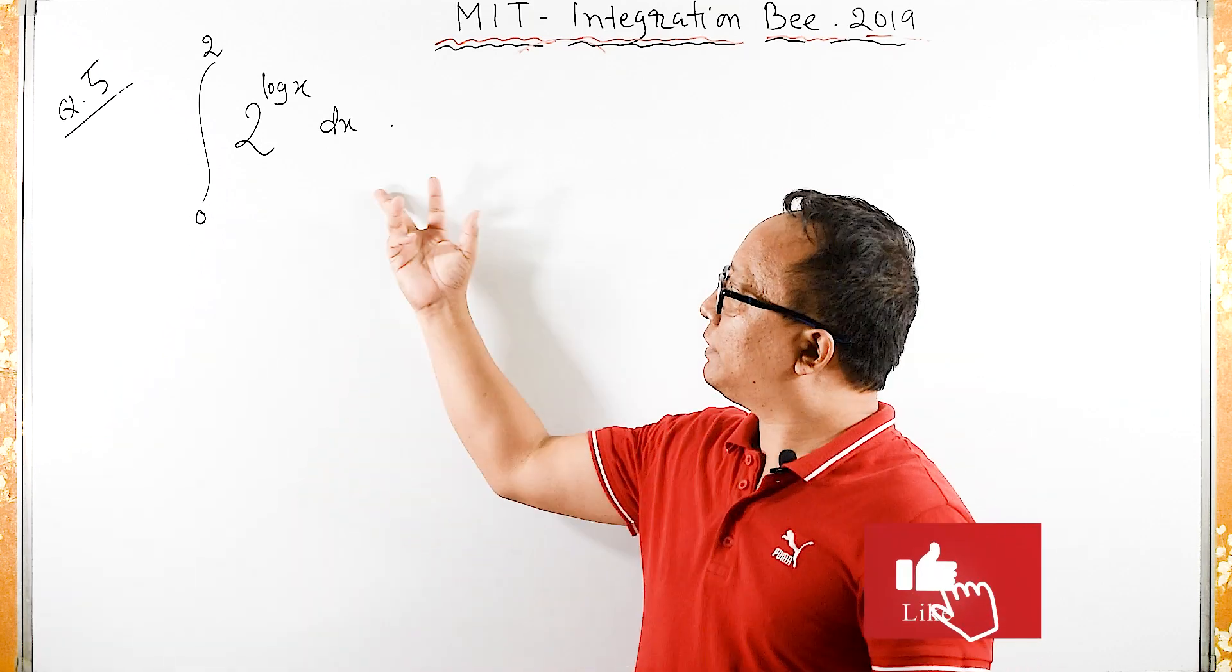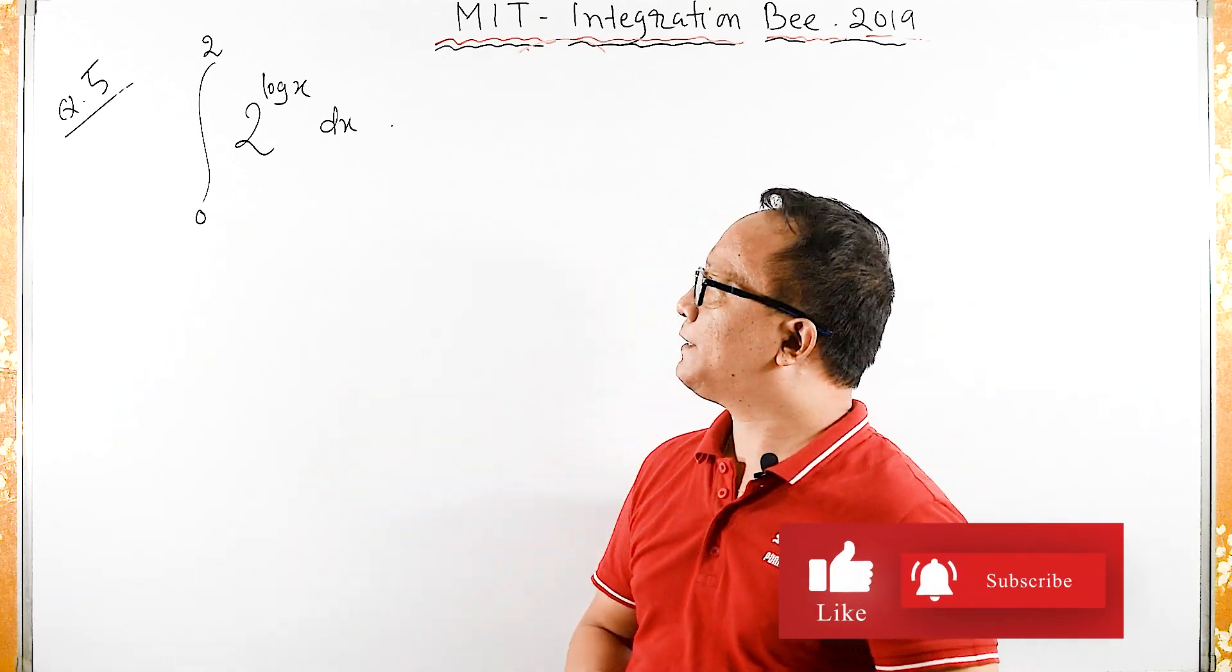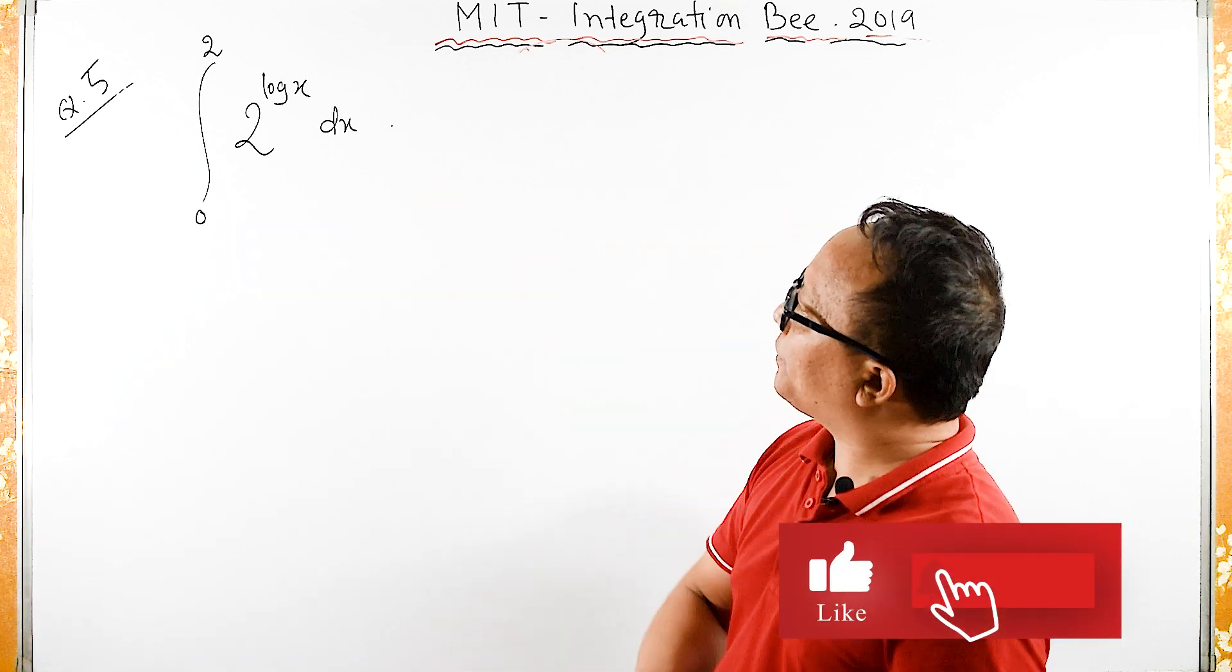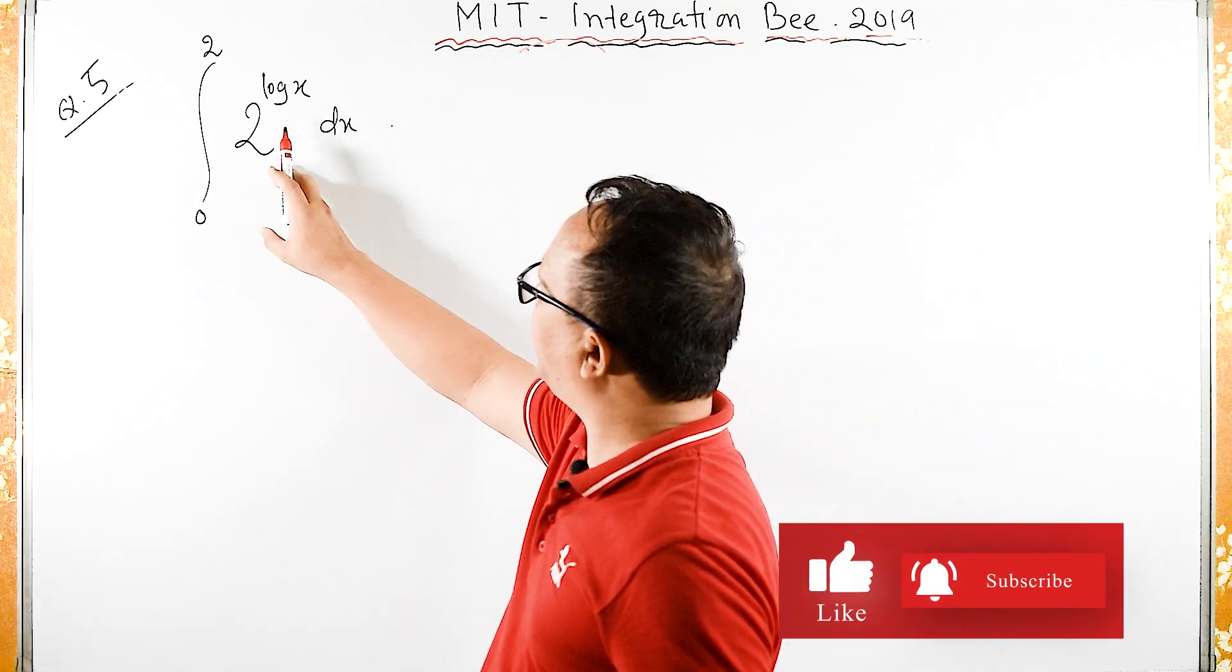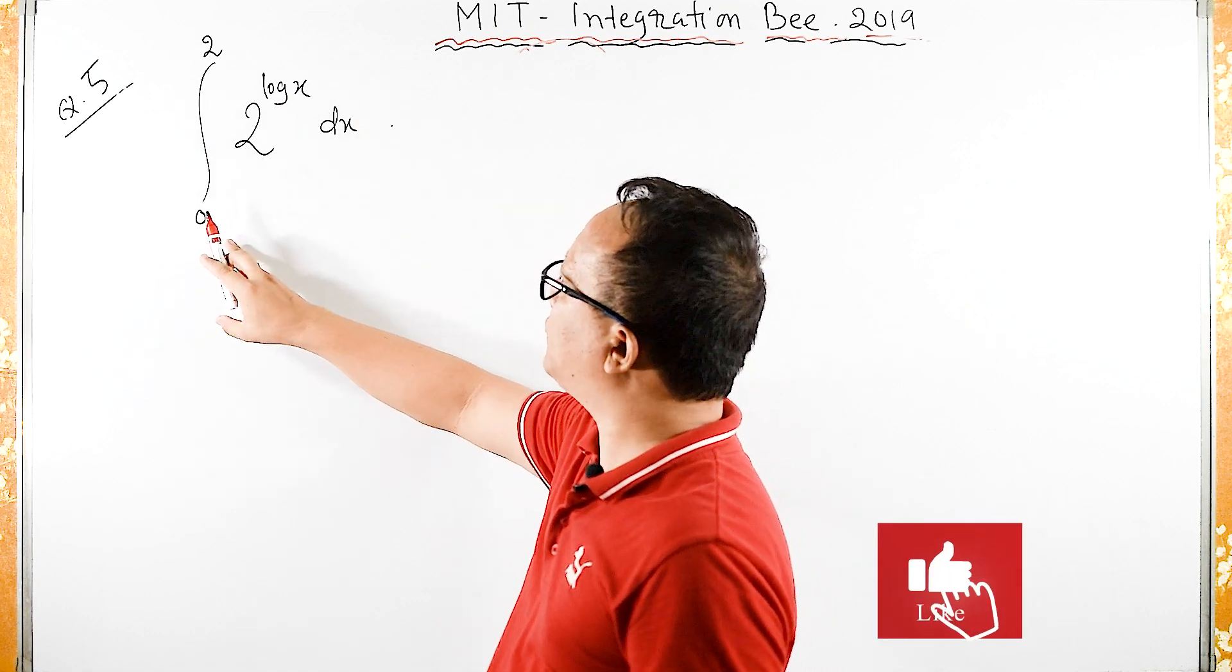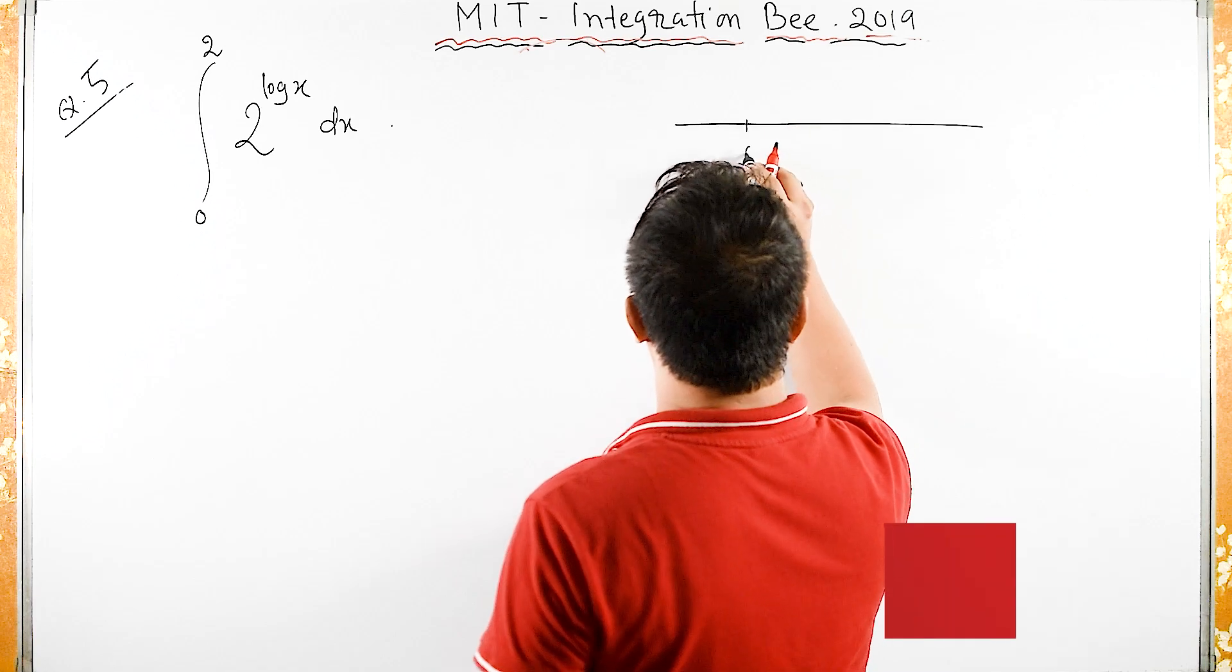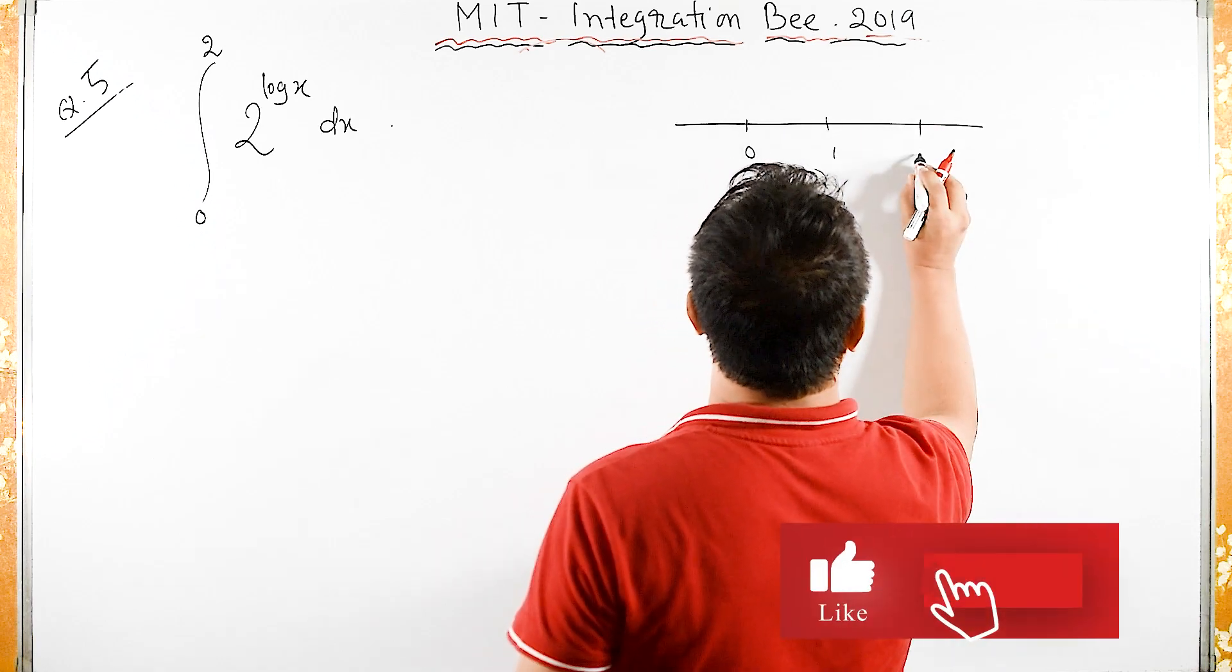Welcome back. This integration was asked by MIT Integration Bee qualified exam in the year 2019. This is question number 5. We have 2 raised to log x, 2 is constant, and the limit is from 0 to 2. The integral is from 0, we have 1 here, we have 2.